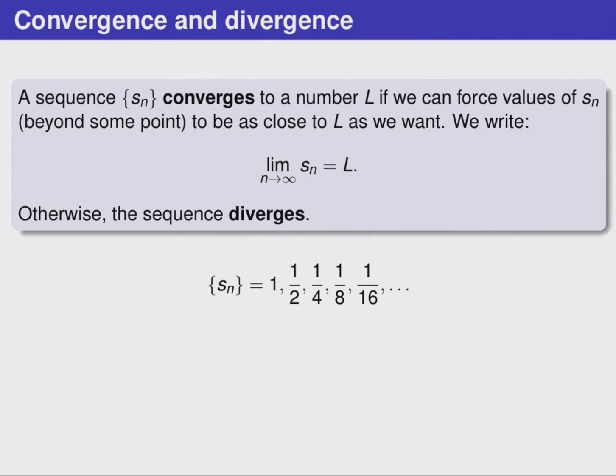Just like functions, we have an idea of a limit and convergence for sequences. A sequence S sub n is said to converge to a number L if we can force the values of S sub n beyond a certain point to be as close to the limit L as we want. We'll write this notation, which is pronounced, the limit as n goes to infinity of S sub n equals L, to represent when a sequence converges to a limit. If a sequence doesn't converge, then we say it diverges.